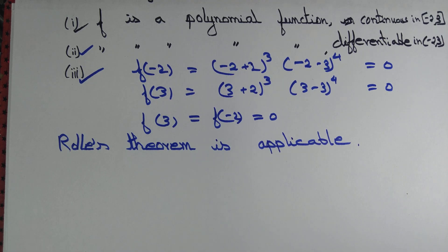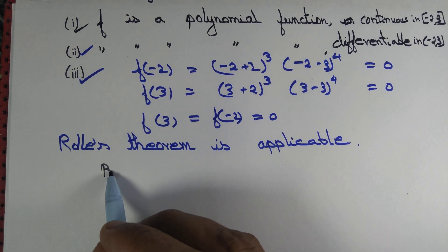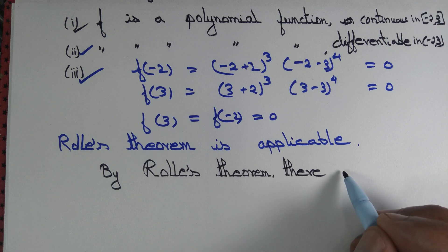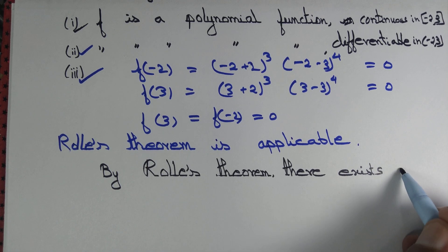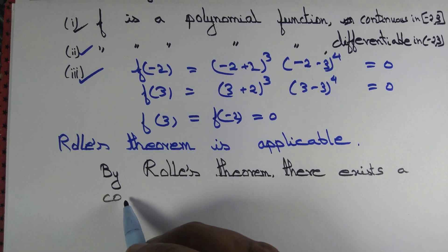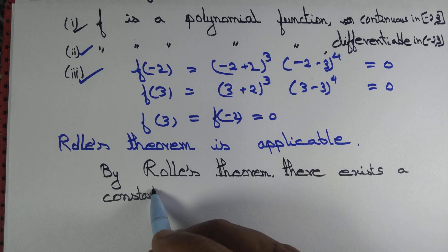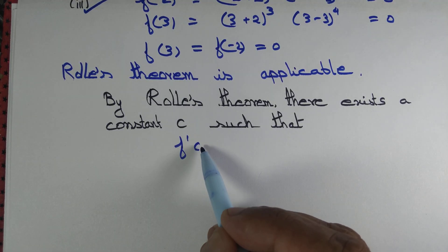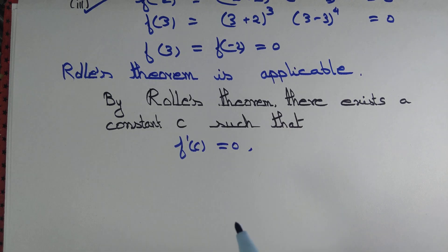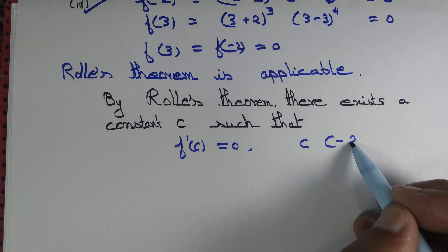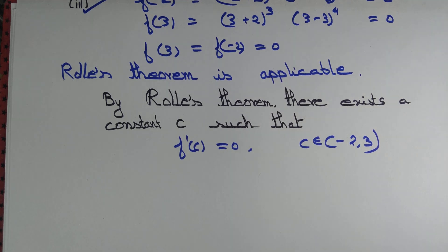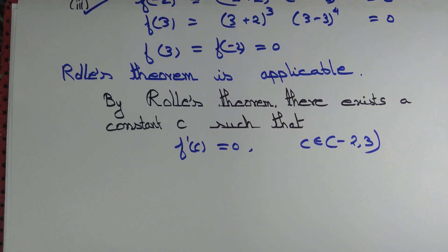Since Rolle's theorem is applicable, by Rolle's theorem there exists a constant c such that f′(c) = 0, and c must belong to the open interval (−2, 3). Let's try to determine such a constant c.